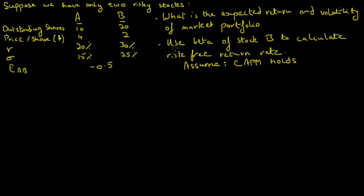We also have to use the beta of stock B to calculate the risk-free return rate. The only assumption we're making is that the capital asset pricing model holds. To start with, let's find out what the total market capitalization is.